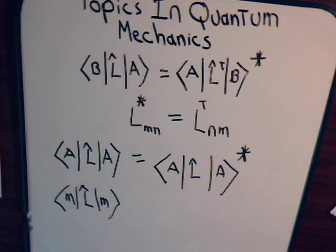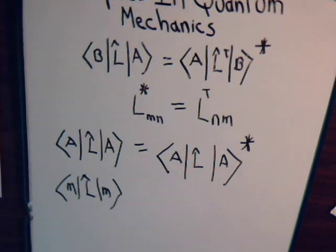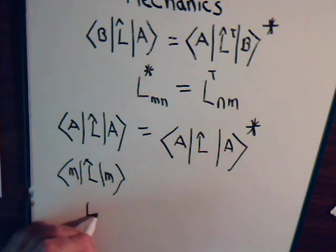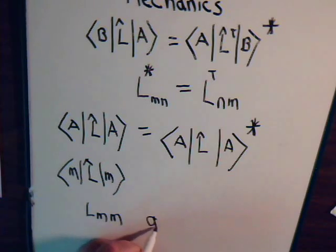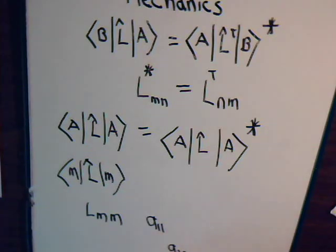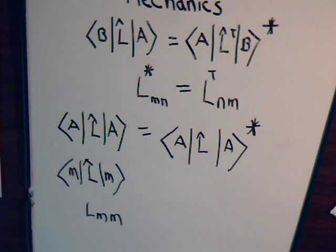We're saying that expression has to be a real number. This would be the matrix representation — linear operator L, its matrix representation. So what that means is that for the matrix expression of our linear operator, the diagonal elements have to be real. When the row and column index are the same number, you're on a diagonal: A11, A22, A33, and so forth. So if a linear operator equals its own adjoint, when it's in matrix form, the diagonal elements of the matrix have to be real numbers.